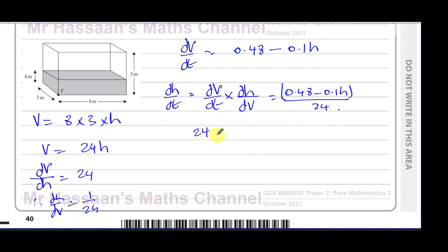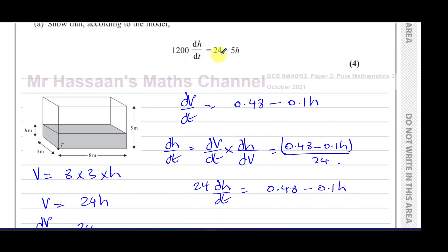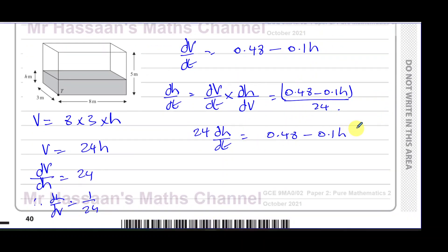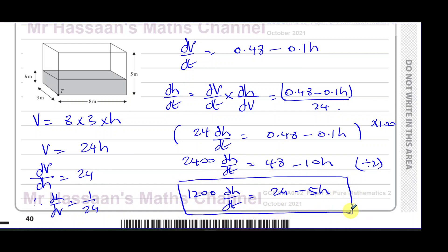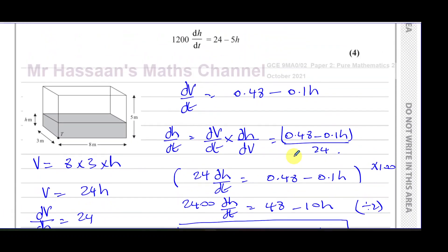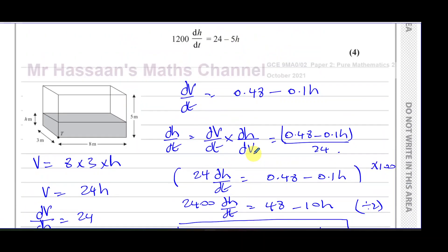Multiplying both sides by 24 gives 24·dh/dt = 0.48 − 0.1h. To eliminate decimals, I multiply the whole equation by 100, giving 2400·dh/dt = 48 − 10h. There's a common factor of 2, so dividing both sides by 2 gives 1200·dh/dt = 24 − 5h, which is exactly what we were asked to show.